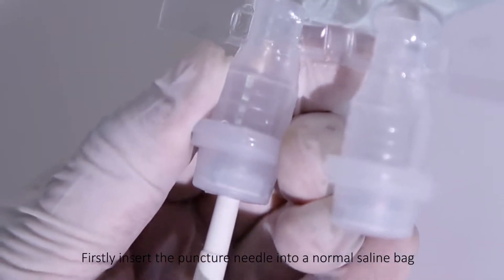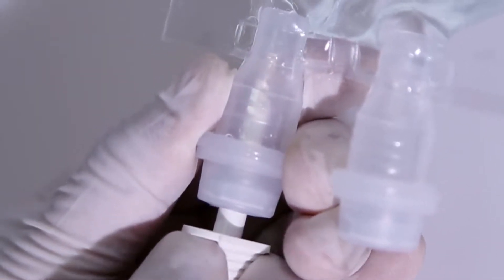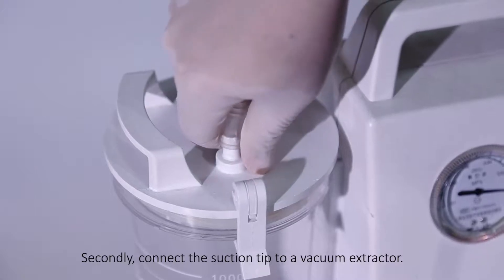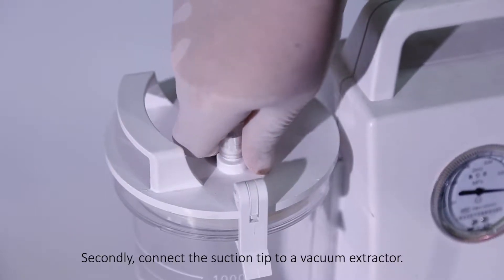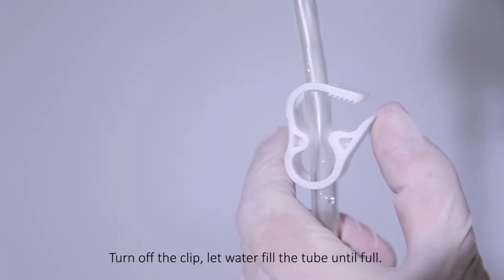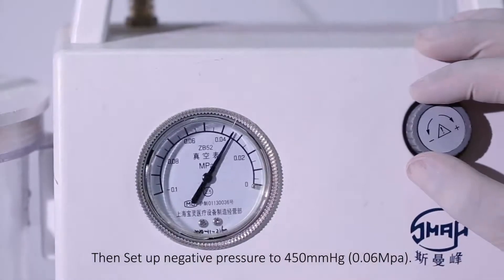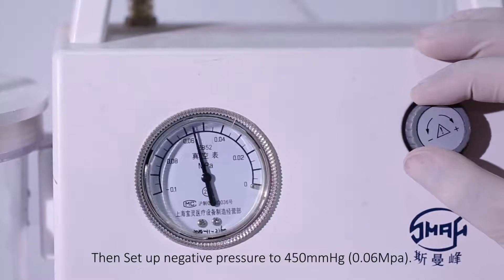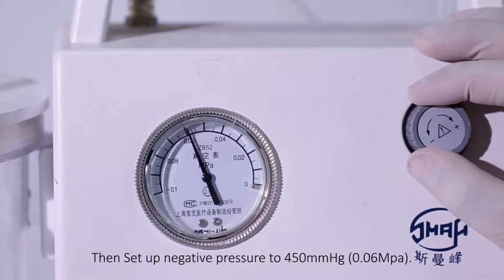Firstly, insert the puncture needle into a normal saline bag. Secondly, connect the suction tip to a vacuum extractor. Turn off the clip, let water fill the tube until full, then set up negative pressure to 450 mmHg or 0.06 MPa.